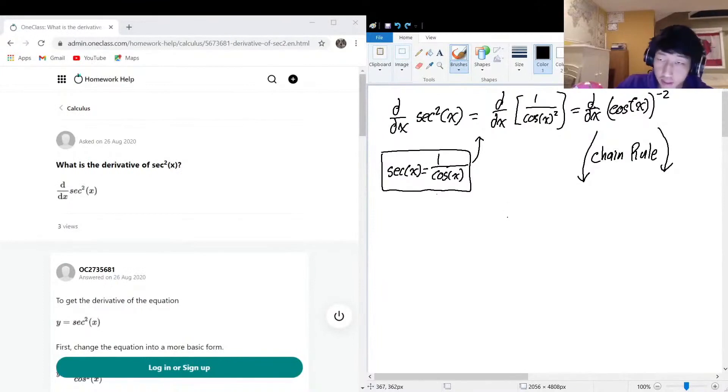To do the chain rule, we have a power there, so we're going to have to multiply by the power negative 2, multiplied by cos x but now negative 1 because we brought the negative 2 down and subtract 1 from the power. And then we have to multiply by the internal derivative, so the derivative of cos is negative sine.